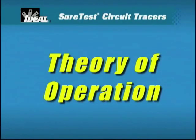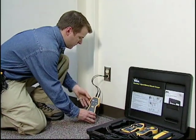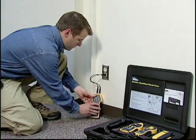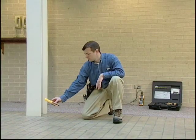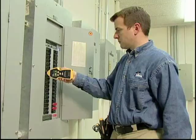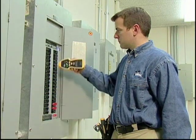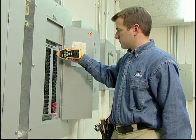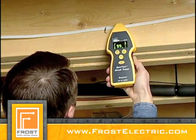It's important to understand the basic theory of circuit tracer operation. The transmitter generates a pulsed electromagnetic field onto the circuit. The receiver detects the relative strength of this field when placed in the proper orientation to the wires being traced or breakers being identified. As the signal becomes stronger, the receiver's numeric value and variable pitch and tone increase.